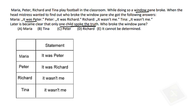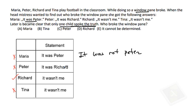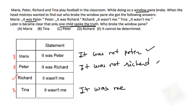So now we know the correct statement is only given by Richard. If Richard's statement is correct, then Richard did not break the window. Now let's think about the false statements of everyone else. Maria's false statement 'it was Peter' means the truth is it was not Peter. Peter's false statement 'it was Richard' means it was not Richard. Tina's false statement 'it wasn't me' means it was Tina. There is no contradiction here — it was not Peter, it was not Richard, it was Tina. Richard already said it wasn't me. So based on this conclusion, the window is broken by Tina.